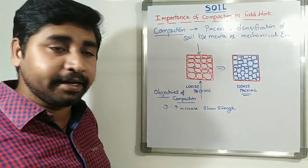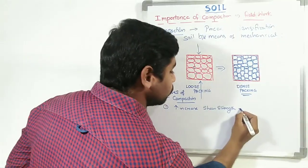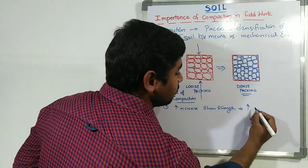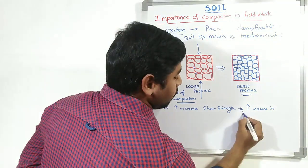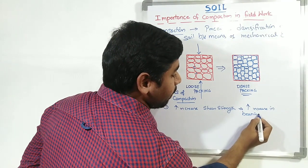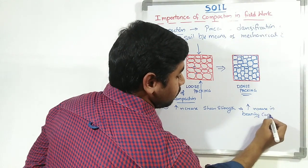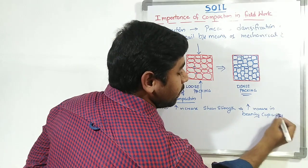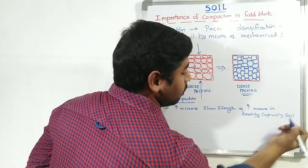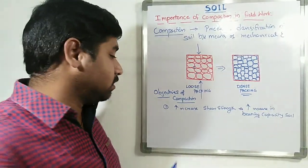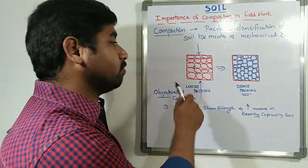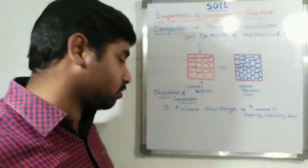On doing compaction, the shear strength of the soil is going to get increased, which leads to increase in bearing capacity of soil. Bearing capacity of soil is going to increase with increase in shear strength, which is increased because of doing the compaction.